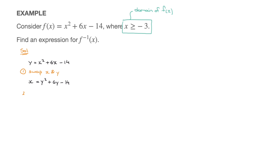We move on to step two. In step two, we need to rearrange the expression in order to make y the subject. To make y the subject in this expression, we need to complete the square on the right-hand side, which some of you may know as the vertex form.